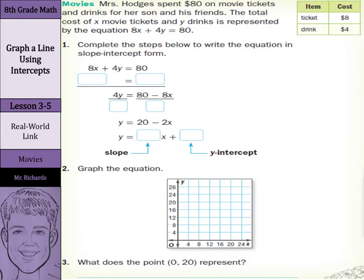Mrs. Hodges spent $80 on movie tickets and drinks for her son and his friends. The total cost of x movie tickets and y drinks is represented by the equation 8x plus 4y equals 80.